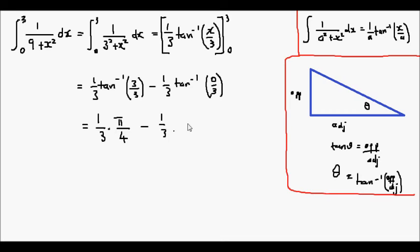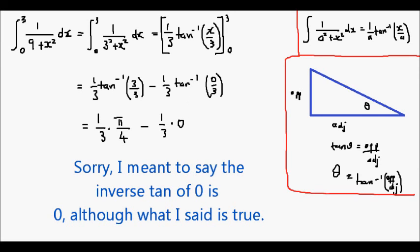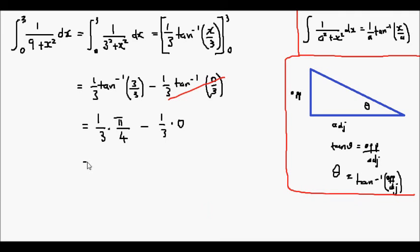Minus 1 third. What we have here is the opposite side length being 0 and the adjacent side length being 3, so therefore that means we have a horizontal line so the angle of a horizontal line will be 0. So tan of 0 is equal to 0. So that means our final answer for this integral is equal to pi over 12.